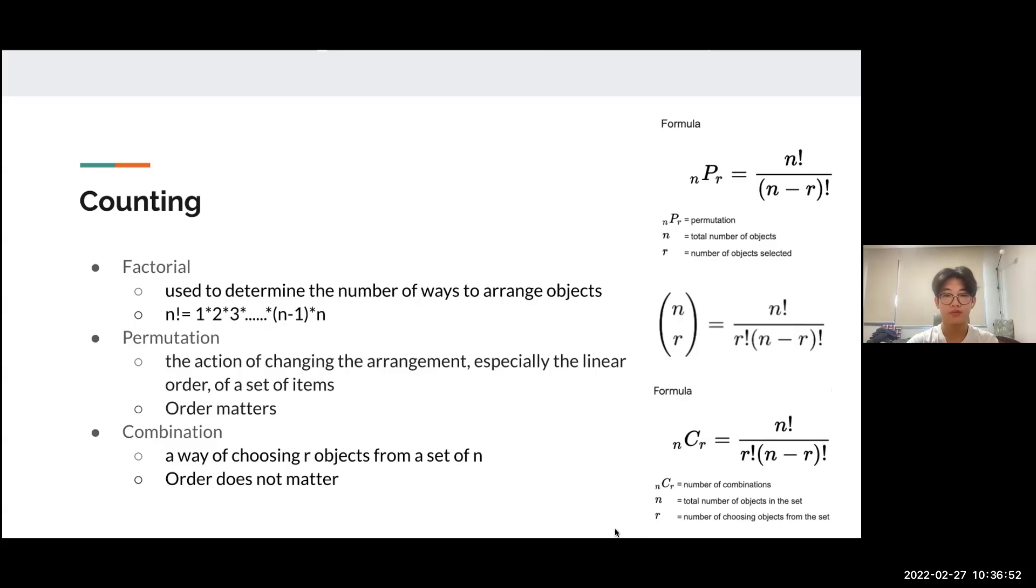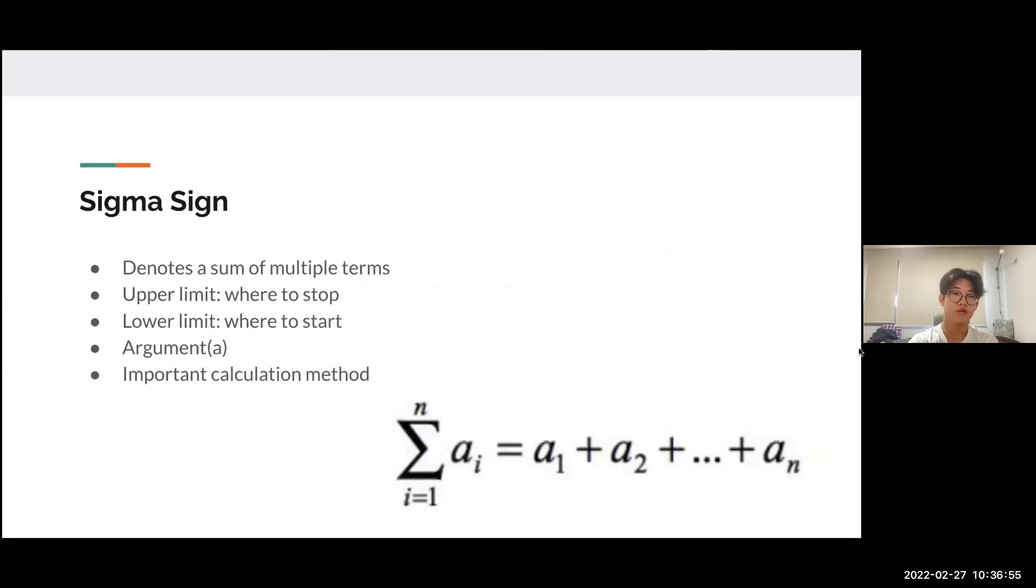The next important tool is the sigma sign. Sigma is this E-looking sign, derived from the Greek letter. The upper limit tells us where to stop and is represented by N. The lower limit tells us where to start and is represented by i equals 1. The argument differs by function, so you have to consider it while looking at different functions. This is an important calculation method for solving combinatorics problems because the formulas I'll introduce later involve the sigma sign.